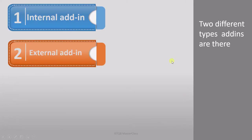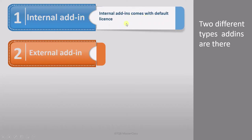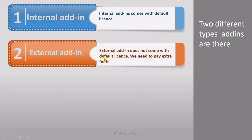These add-ins are of two types: internal add-ins and external add-ins. Internal add-ins come with the basic license, so whenever we install a trial version or a default version, internal add-ins come with it. Whereas for external add-ins, we have to pay extra — external add-ins do not come with the default license.